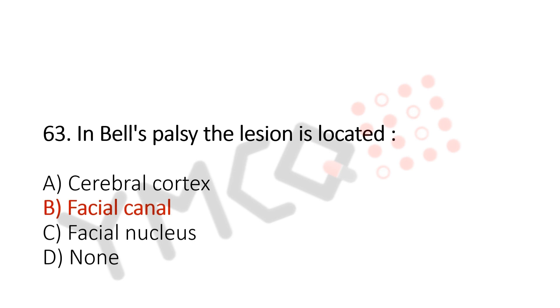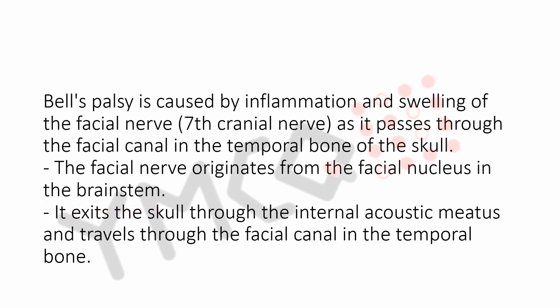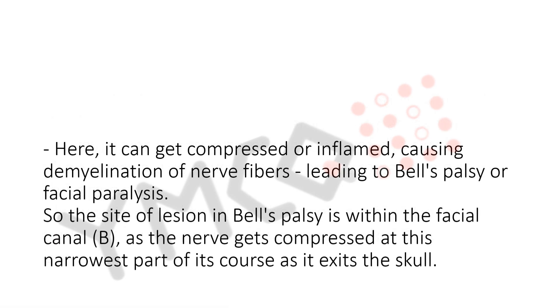Explanation for this question: Bell's palsy is caused by inflammation and swelling of the facial nerve, the seventh cranial nerve, as it passes through the facial canal in the temporal bone of the skull. The facial nerve originates from the facial nucleus in the brain stem. It exits the skull through the internal acoustic meatus and travels through the facial canal in the temporal bone, where it can get compressed or inflamed, causing demyelination of nerve fibers, leading to Bell's palsy or facial paralysis.